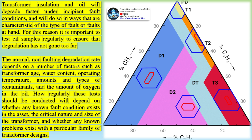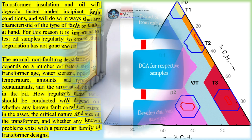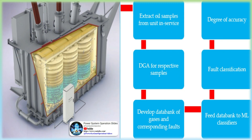Why should we implement DGA monitoring on power transformers? Dissolved gas is a leading indicator of the health of a transformer. Dissolved Gas Analysis (DGA) helps determine the types of abnormal events that may be occurring within the main tank. It is an effective way to analyze partial discharge, arcing, excessive thermal conditions, and more.